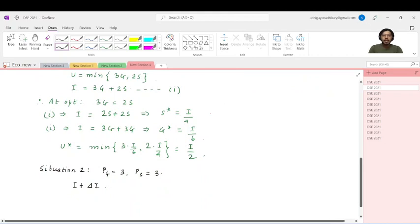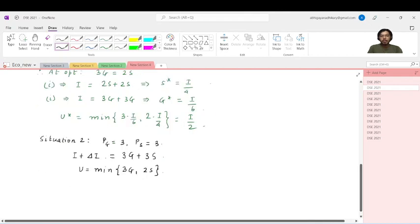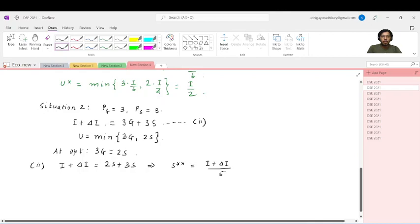So what is the new level of utility U double star? It is minimum of 3 times G double star comma 2 times S double star. So that is minimum of 2 by 3 times i plus delta i comma 2 times i plus delta i. So this is the same as 2 by 5 times i plus delta i. Now how are we going to have this change in income delta i? It is by the way of maintaining the same level of utility. That means U double star equals U star. U star had come out to be i by 2. So 2 by 5 times i plus delta i equals i by 2. So i plus delta i comes out to be 5 by 4 times i. So delta i is i by 4.